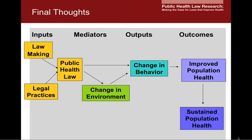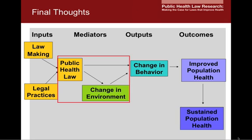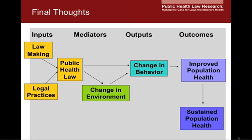Building a logic model is an iterative process — it cannot be done in one sitting. The process involves thinking about each of the building blocks first: what is the law or legal practice and what are the associated outputs or outcomes? Next, you can move to the intermediate step and consider the mechanisms by which the law or legal practices affect the health outcomes. Reviewing and revisiting your logic model is the best way to be certain that you have captured all of the elements. Your public health law research questions can focus on one of many different relationships in the model. While this presentation focused on how laws can impact population health outcomes, you could focus more specifically on how the law influences change in the environment or how the law influences change in behavior. You will want to start with a large overview logic model, but you may focus on one specific area to investigate the mechanisms involved.